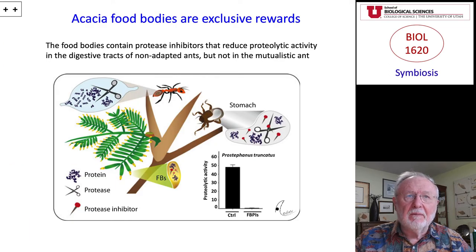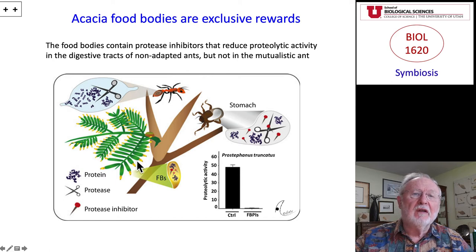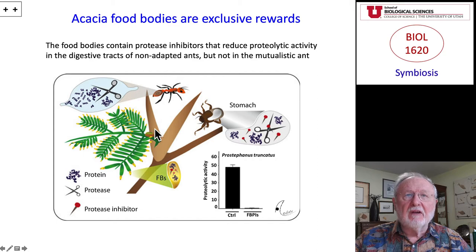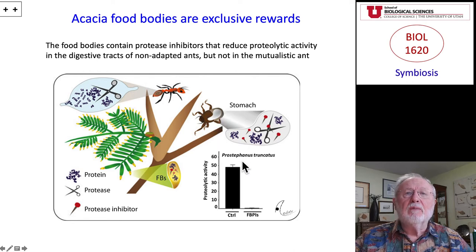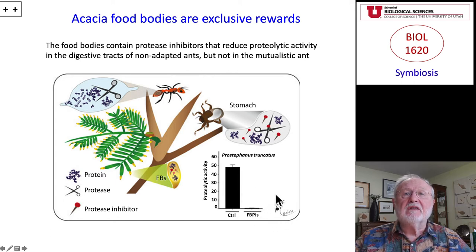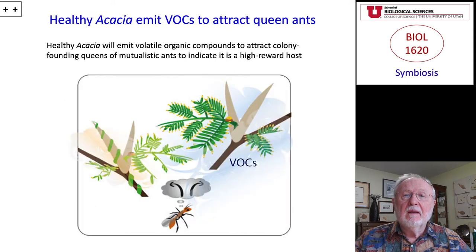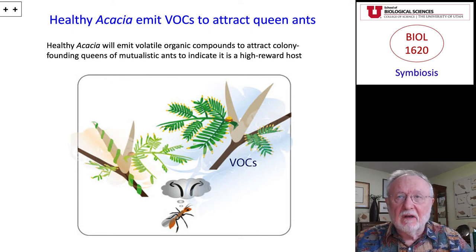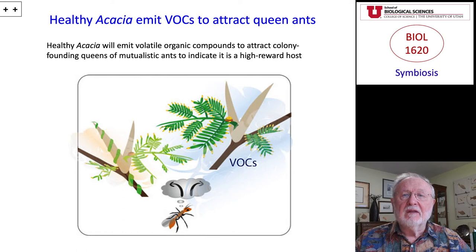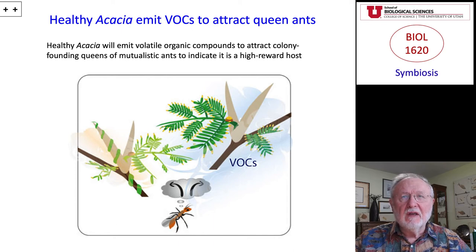Acacias provide ants with food bodies that are exclusive rewards — a carbohydrate-rich source of food. It turns out that adapted ants are able to break down the protease that inhibits growth in the digestive tract, whereas ants that are not adapted experience a negative impact on the release of carbohydrates and protein. A young plant needs to attract a queen ant to establish a colony, and this is done by the emission of VOCs — volatile organic compounds, a smell. The stronger the smell, the more likely a female ant will be attracted.